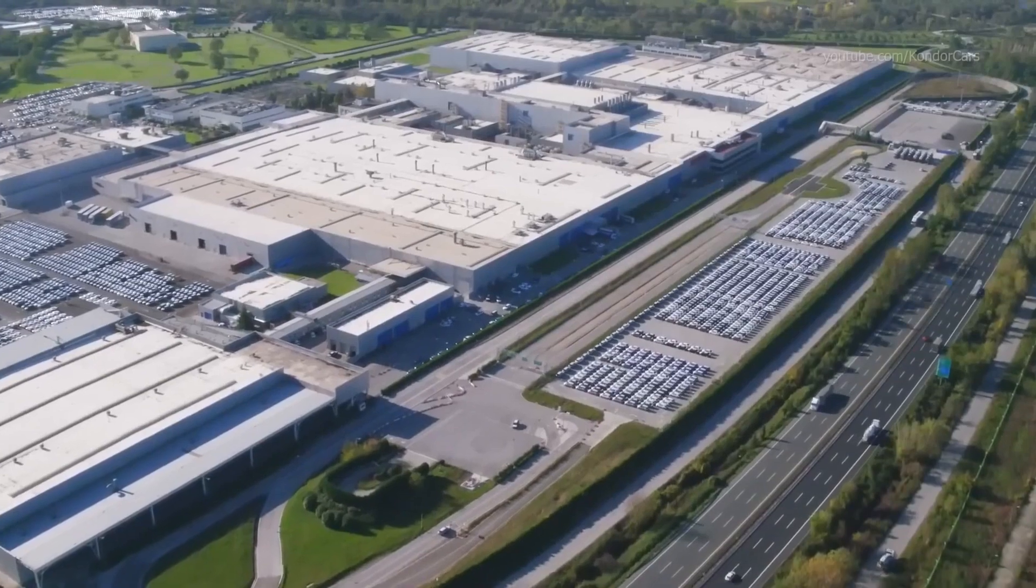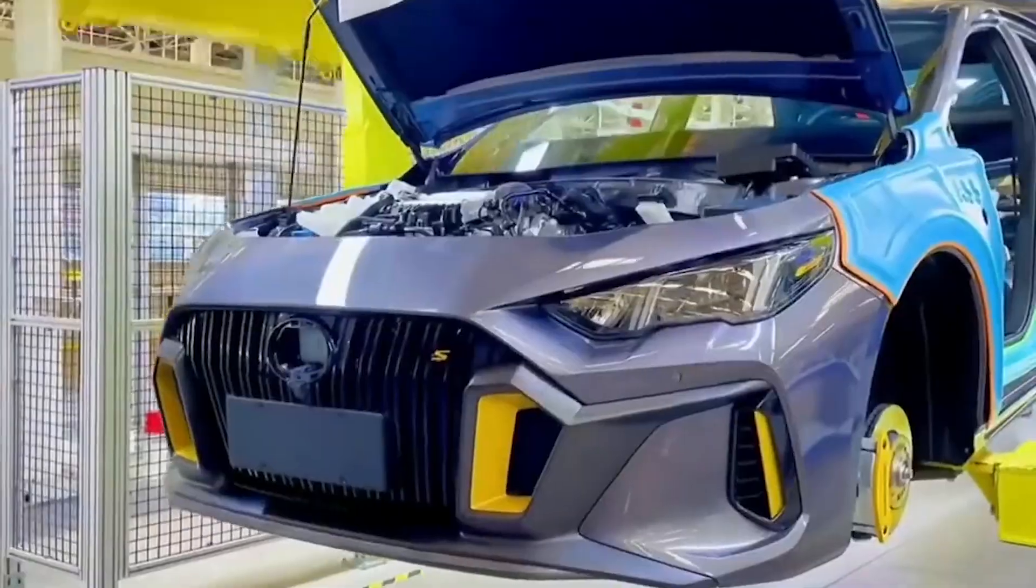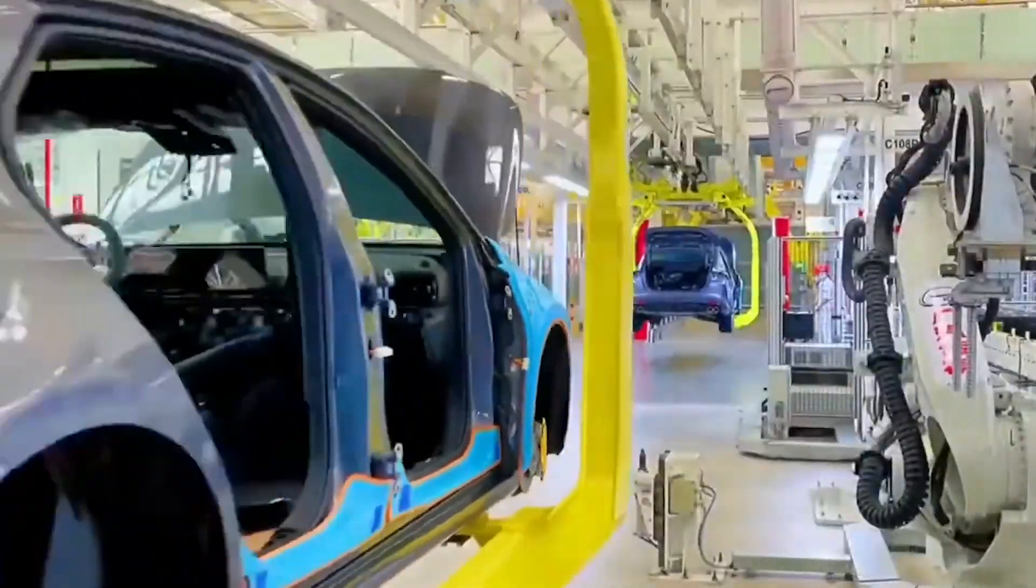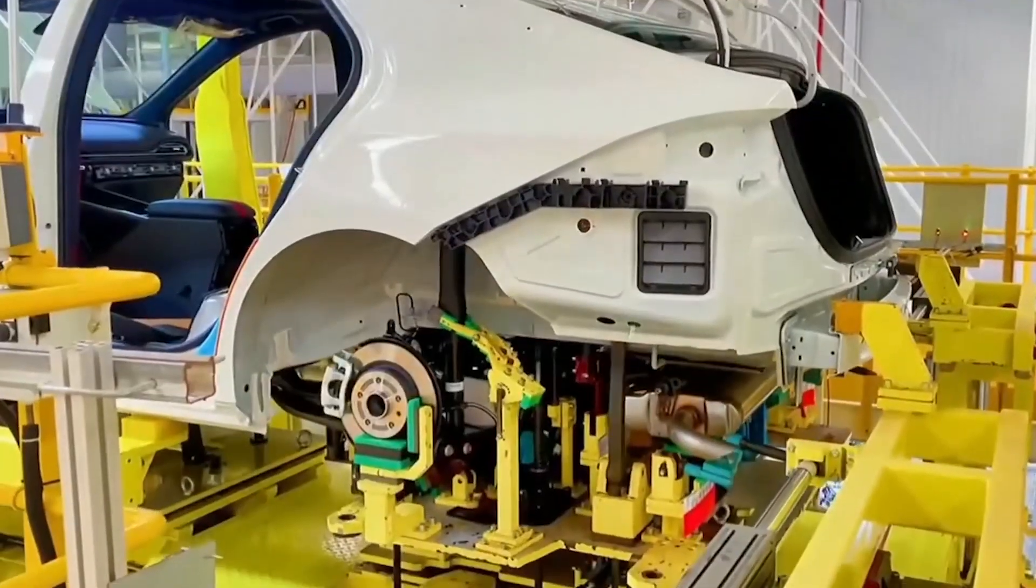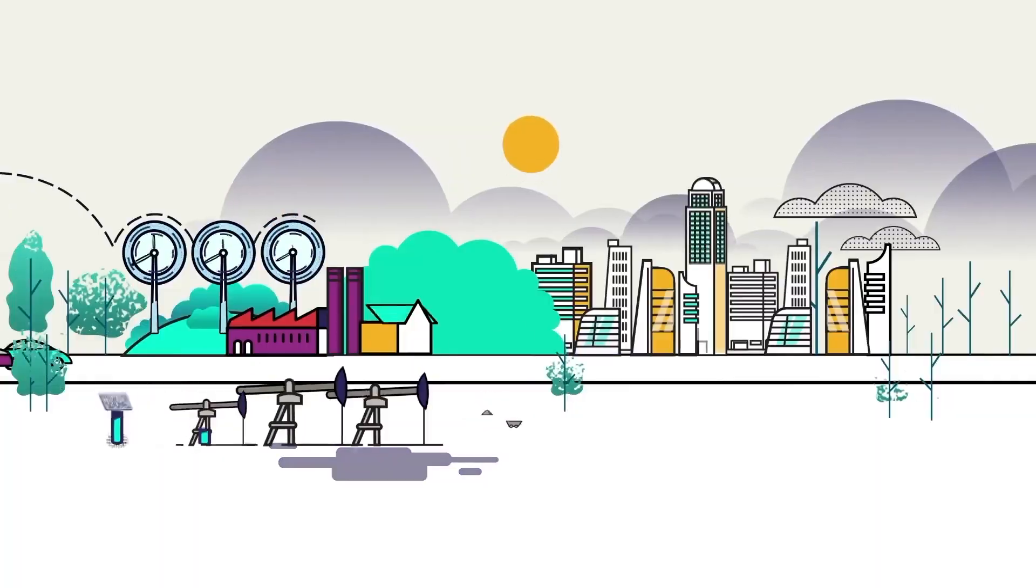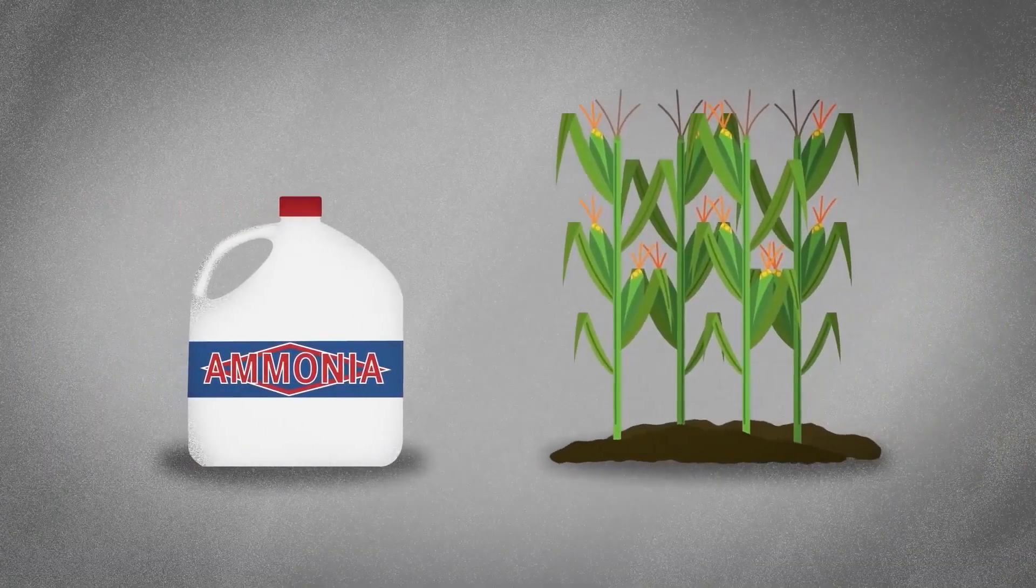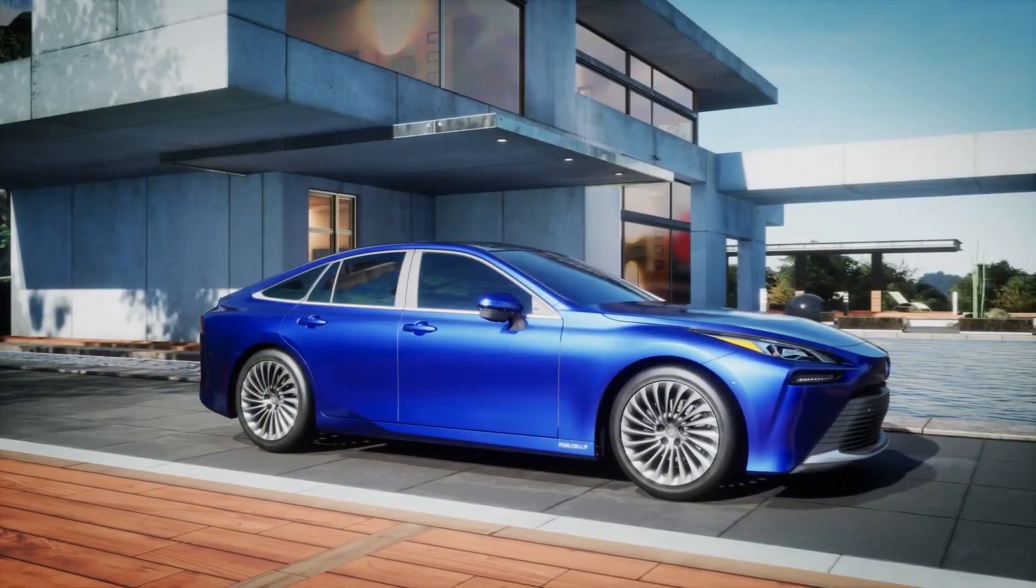The automotive industry is amidst a whirlwind of groundbreaking innovations, all driven by the pressing need to combat carbon emissions. And right at the forefront of this movement is Toyota, in collaboration with GAC, the Chinese state-owned automaker, to explore revolutionary solutions, including the utilization of ammonia engines. These cutting-edge engines offer a promise of significantly reducing greenhouse gas emissions, propelling us toward a more sustainable and eco-friendly future in the automotive realm.